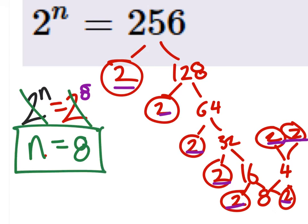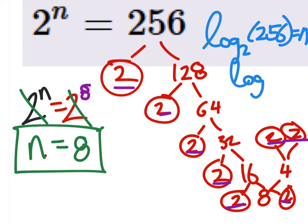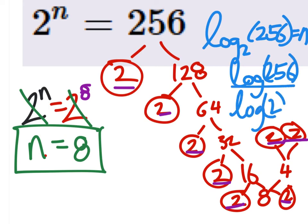So that's a good point. We could change this to log form. So you'd have log base 2 of 256. And we've already looked at how to plug that into the calculator. You'd have log of 256 divided by the log of 2. That would give you 8.